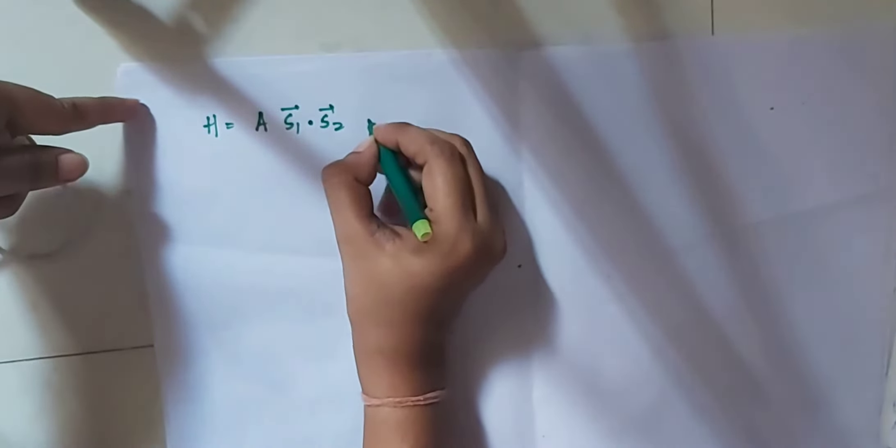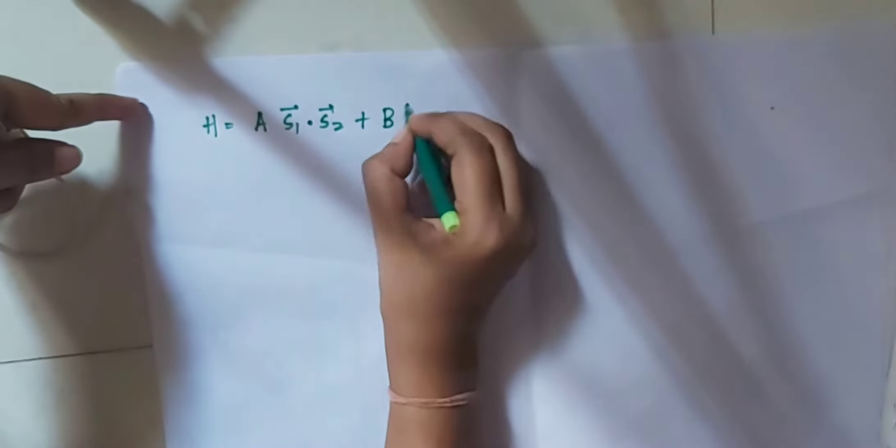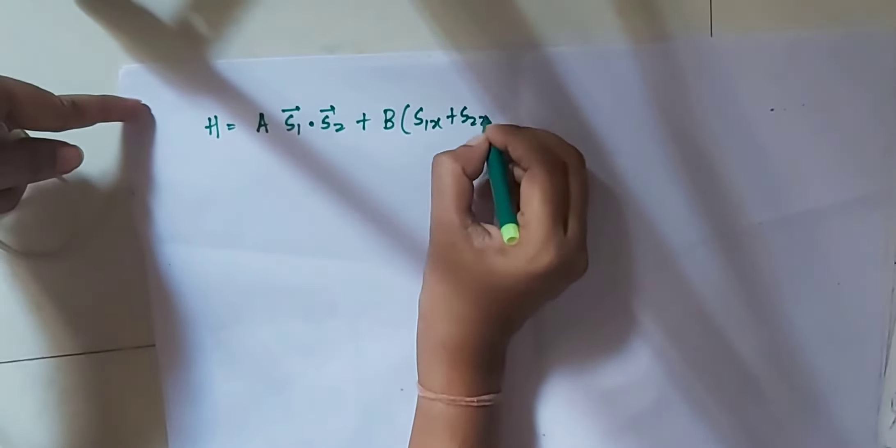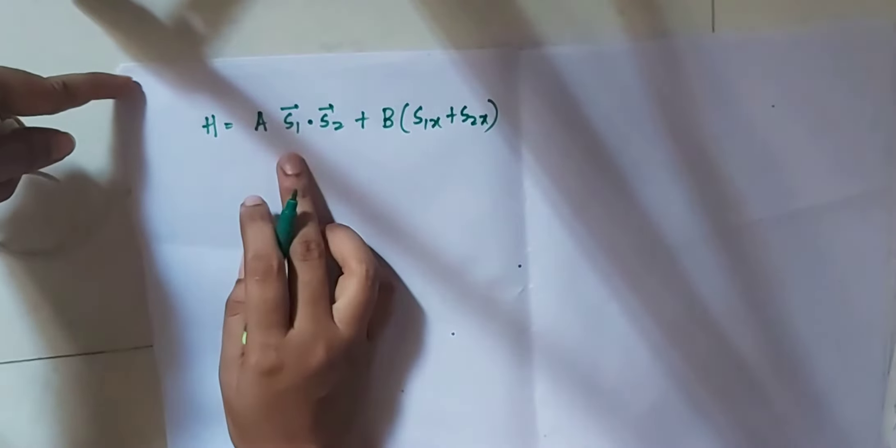Hello everyone, welcome back to my channel. Today we'll discuss one more question from the previous year CSIR-NET Physical Science. There is a question that gives the Hamiltonian of two interacting particles with spin 1 and spin half: H = a(S1·S2) + b(S1x + S2x).